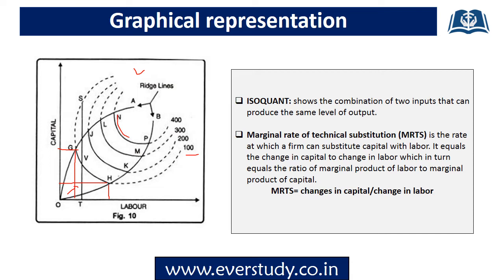Now let's discuss MRTS — Marginal Rate of Technical Substitution. In this graph, we have used 10 units of capital and 5 units of labor. If we increase our labor and reduce our capital to 5, then the capital we were ready to sacrifice in order to use more labor is our MRTS. MRTS equals the change in capital divided by the change in labor.